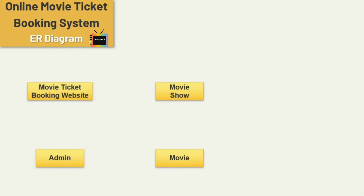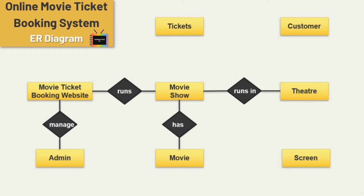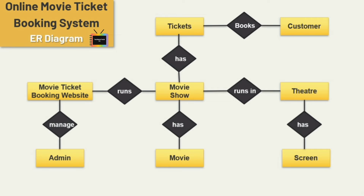Now let's define the relationships between all these entities. First, admin manages the movie ticket booking website, and the movie ticket booking website runs movie shows. Next, a movie show has different movies, and a movie show runs in a theater. We also have the ticket entity: a movie show has tickets, a theater has screens, and a customer books tickets. These are the relationships defined among these eight entities.